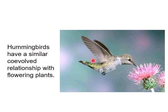Flowers attract pollinators with a variety of elaborate olfactory and visual adaptations. Insect-pollinated flowers are usually yellow or blue because insects see these wavelengths of light best. In addition, petal arrangements often provide perches for pollinating insects. Flowers pollinated by hummingbirds, on the other hand, are often tubular and red. Hummingbirds have a poor sense of smell but see red very well, and their long beak allows them to reach far into tubular flowers. Their hovering ability means they have no need for a perch.